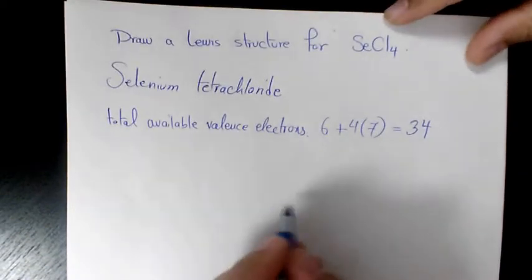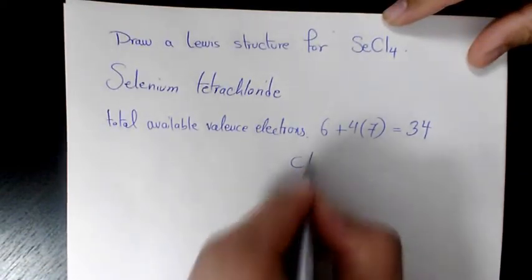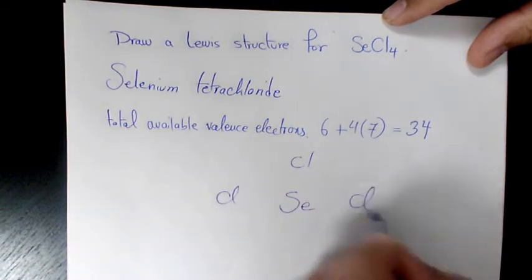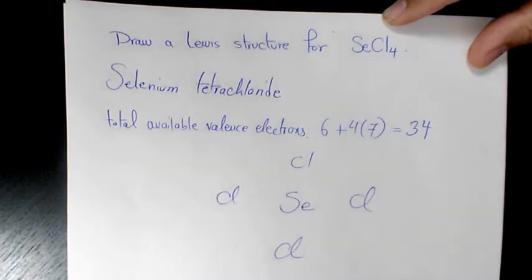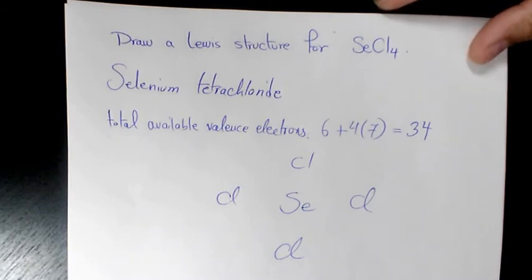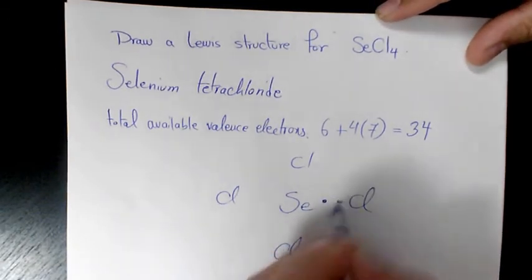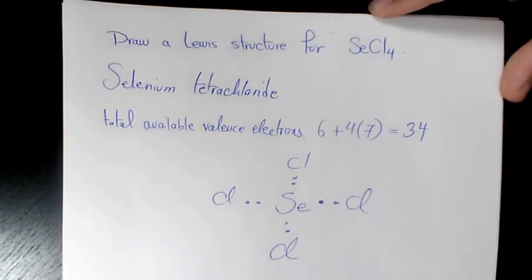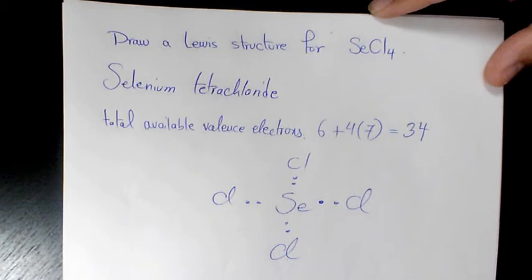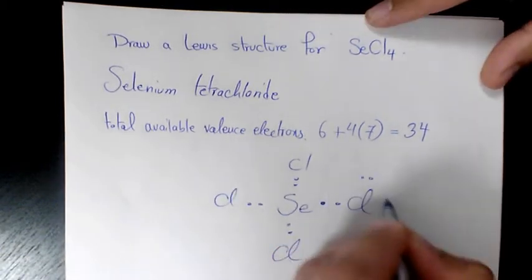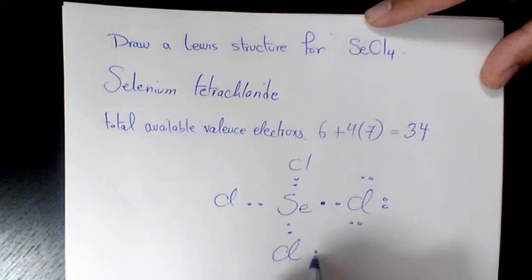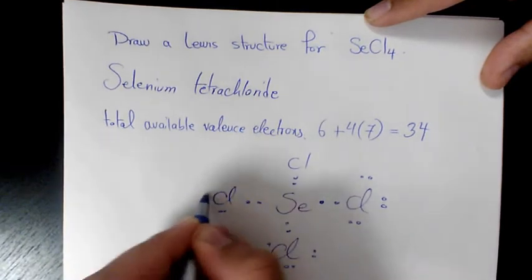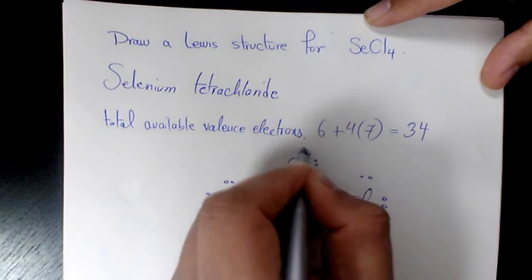So we place Se in the middle, and we have Chlorine, Chlorine, Chlorine, and Chlorine in here. Then we place one pair of electrons between each pair of atoms, and every two of these dots represents a bonding electron pair between these atoms. Then I place pairs of the remaining valence electrons as lone pairs on the surrounding atoms, 3 lone pairs on each Chlorine.